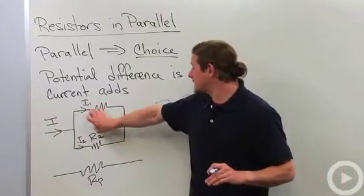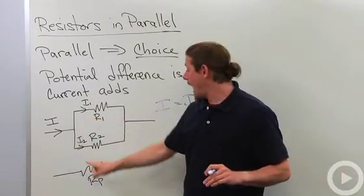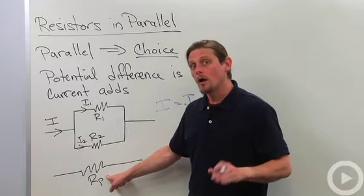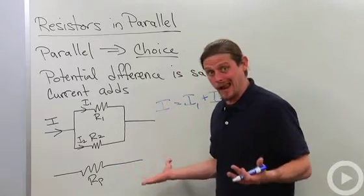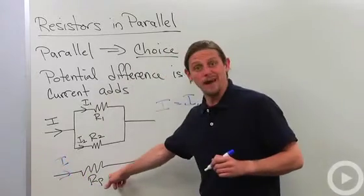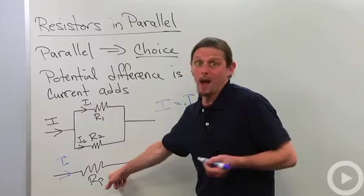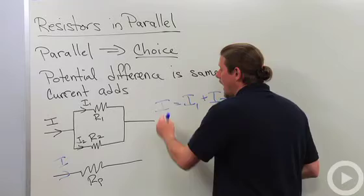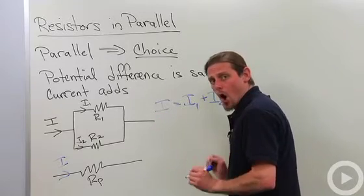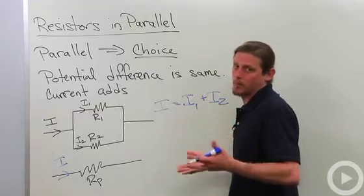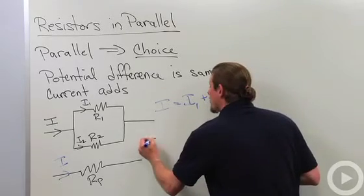Now as always, what we'd like to do is consider this parallel network as a single effective resistor. So I want the potential difference to be the same. Obviously the current going in here into my effective resistor is going to be i. And so what we're going to do is we're going to write the current as delta v over r, the potential difference divided by the resistance, with of course our obligatory minus sign.